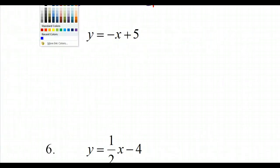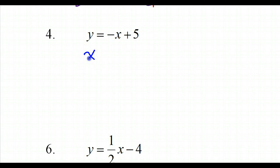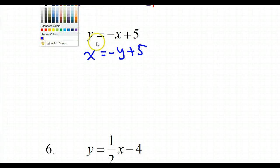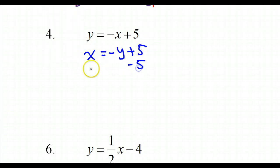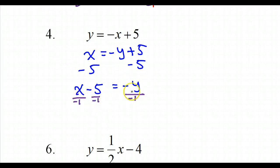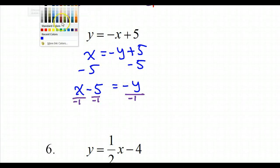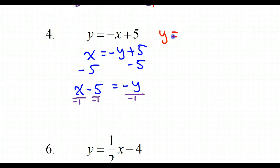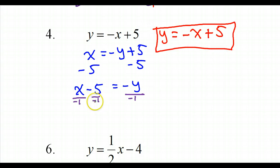Example 4: switch the x and the y — so this will be x equals negative y plus 5. Subtract 5 from both sides: x minus 5 equals negative y. I need a positive y, so divide everything by negative 1 — or multiply by negative 1. Either way, the final answer is y equals negative x plus 5, since a negative divided by a negative is a positive.